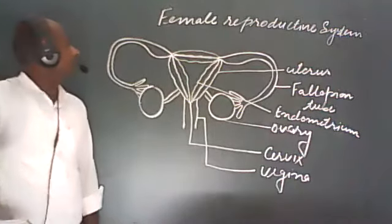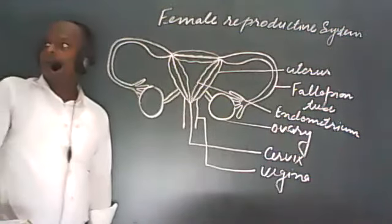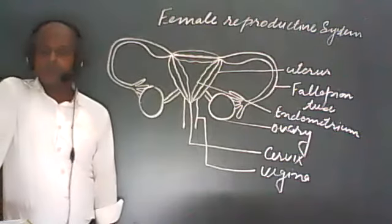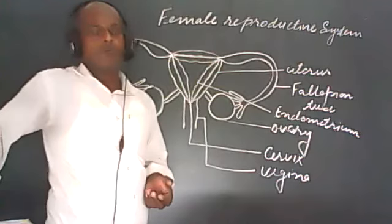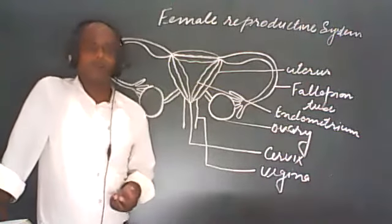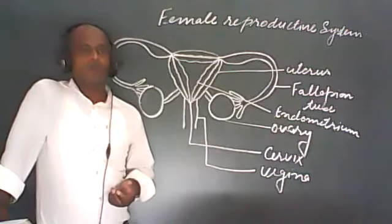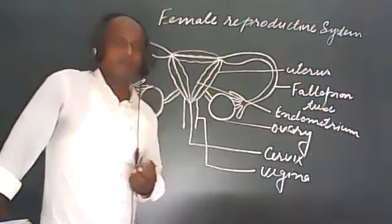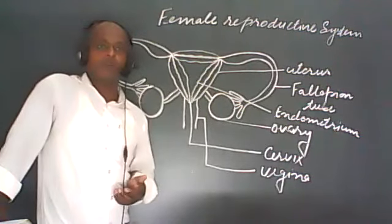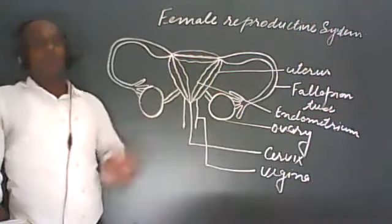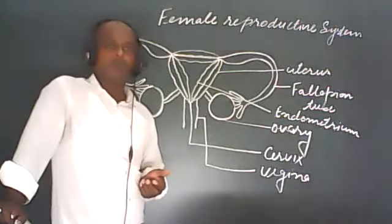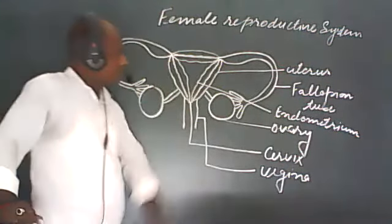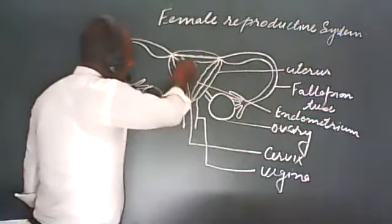Now we have to see the role of the female reproductive system in reproduction. Just as we studied the male reproductive system — the role of testes, vas deferens, seminal vesicles, prostate glands, and Cowper's gland — similarly we have to study the role of different female reproductive organs in reproduction.